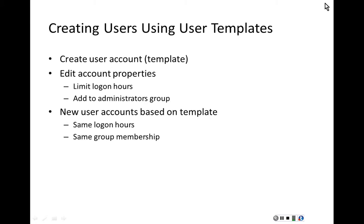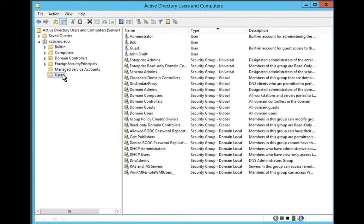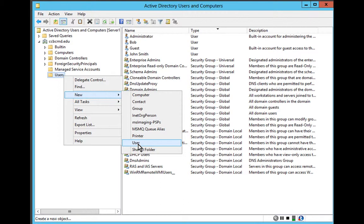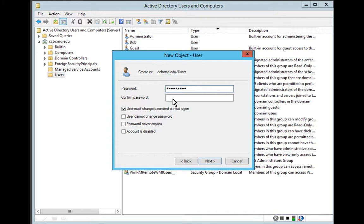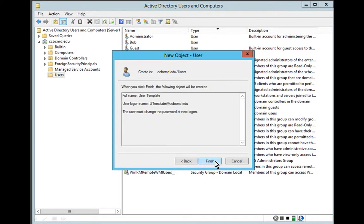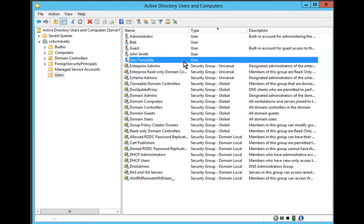Another method of creating user accounts is using user templates. We create a user account that serves as the template and edit its properties — such as limiting login hours or adding the user to a group. Any new accounts created based on the template will inherit those same properties. I right-click, select New, followed by User, and name it User Template with a login name, then click Next, assign a password, confirm it, and click Finish. The template is now created.